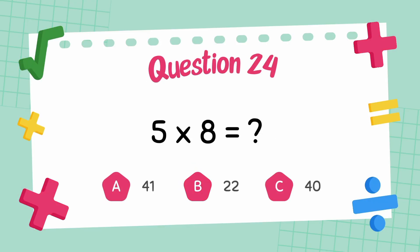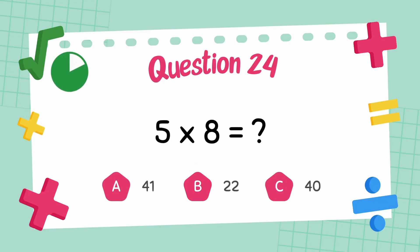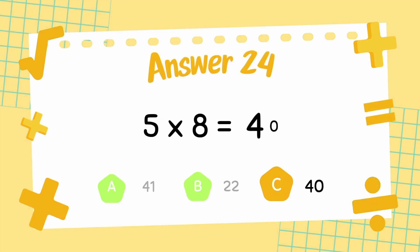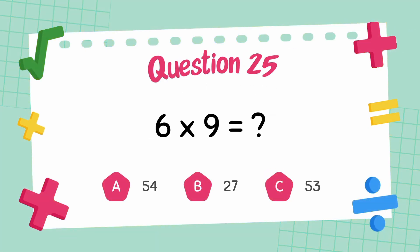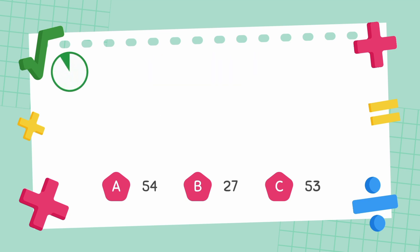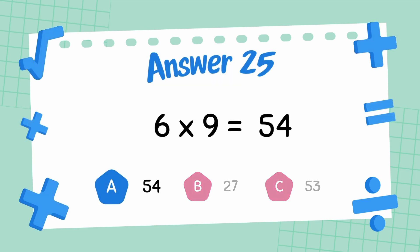What is 5 multiply 8? The answer is 40. What is 6 multiply 9? The answer is 54.